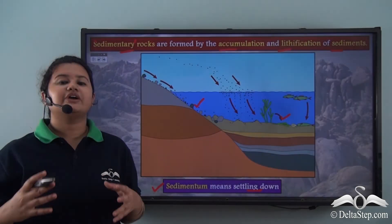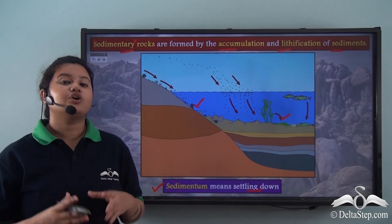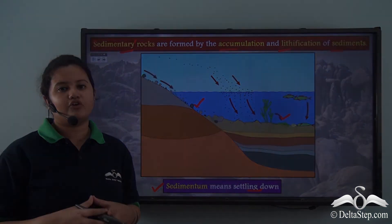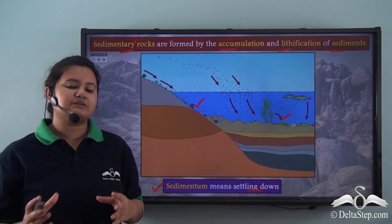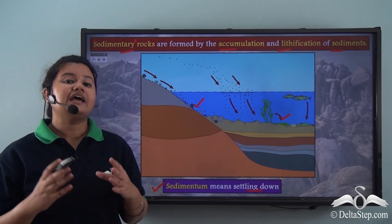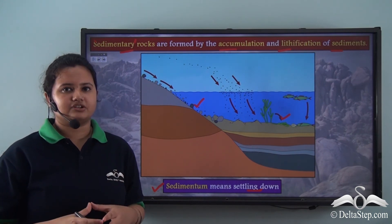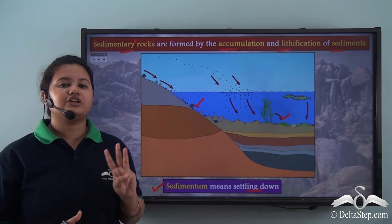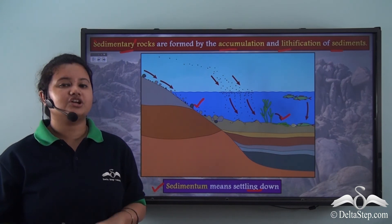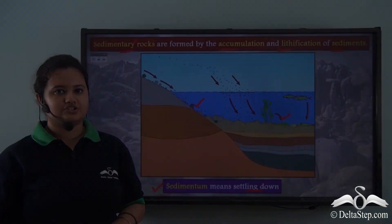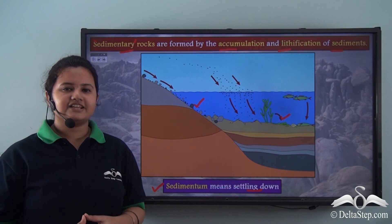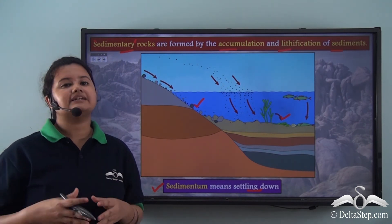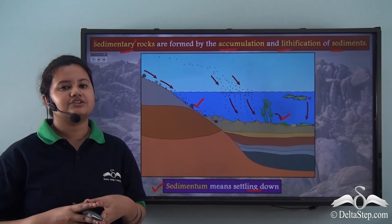In this video we understood what sedimentary rocks are and how they are formed. The main process by which sedimentary rocks are formed is called lithification, which involves three main processes: evaporation, compaction, and cementation. In our next video we will study about the classification and distribution of sedimentary rocks.